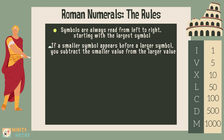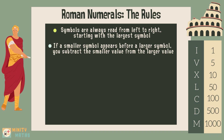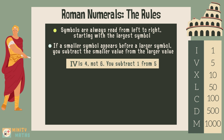If a smaller symbol appears before a larger symbol, you subtract the smaller value from the larger value. For example, IV is 4, not 6, as we start at V because it is the largest, and then subtract anything that comes before.